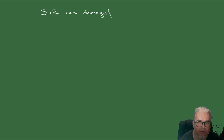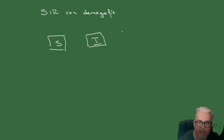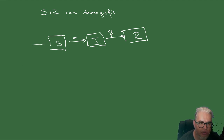Este es un modelo SIR con demografía. El diagrama de cajitas es exactamente el mismo que trabajamos hace dos clases. Tenemos nuestra tasa alfa de infección, nuestra tasa beta de remoción, pero también tenemos nuevos individuos a una tasa Lambda mayúscula, y una tasa de mortalidad mu que no está asociada con la infección.